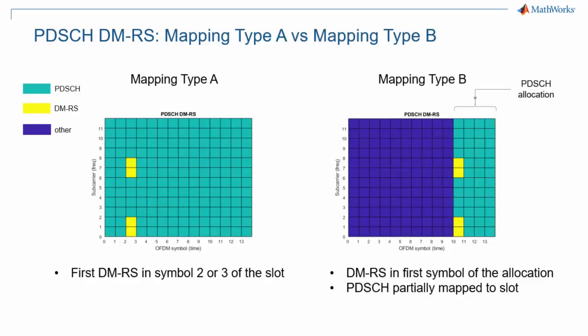There are two types of PDSCH mapping: type A and type B. Type A implies that DMRS are located in symbol 2 or 3 of a slot. Naturally, this makes more sense when the PDSCH allocation starts at symbol 0, as opposed to past symbol 3. Type B implies that DMRS are located in the first symbol of a PDSCH allocation. This makes sense in all cases, but particularly so when the allocation starts midway through a slot, as this case is likely to require short latency, and having the DMRS right away makes for the fastest possible demodulation.